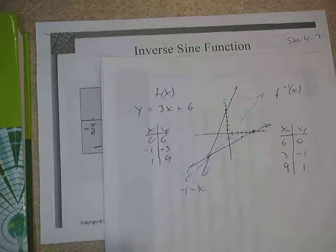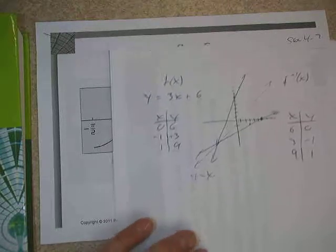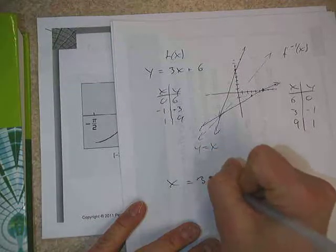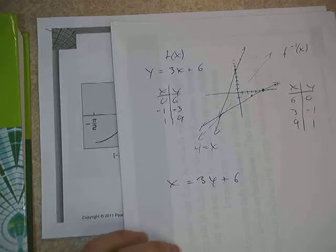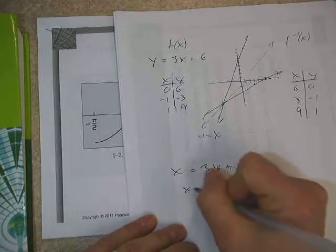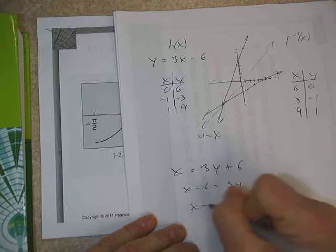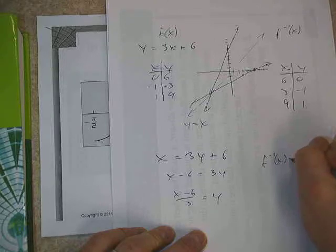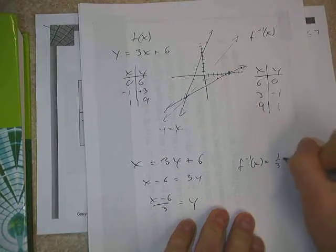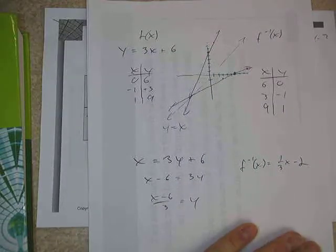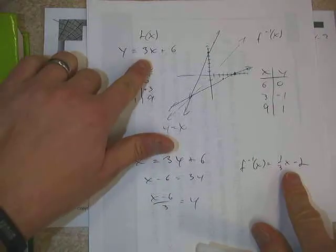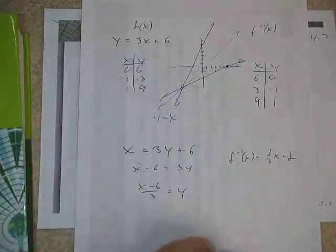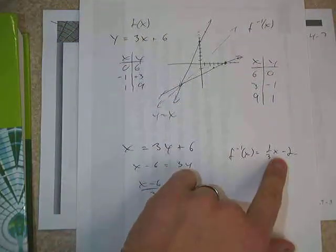We also learned in our previous work how to find the inverse of a function if it's possible. In the case of a linear function, it's always possible. The procedure is to replace the x and the y with one another and then solve the equation for y. So we'd have x minus 6 equals 3y, then x minus 6 divided by 3 equals y, and so our inverse function in this case would be one-third x minus 2.